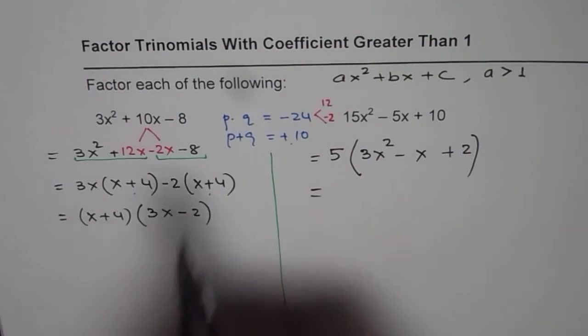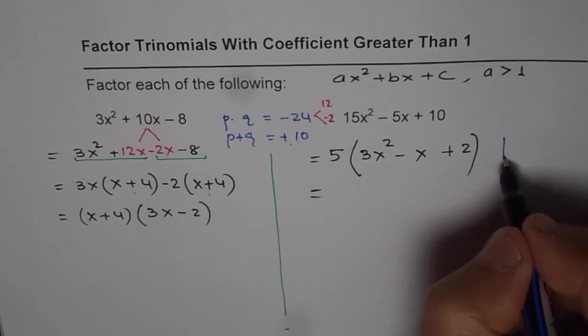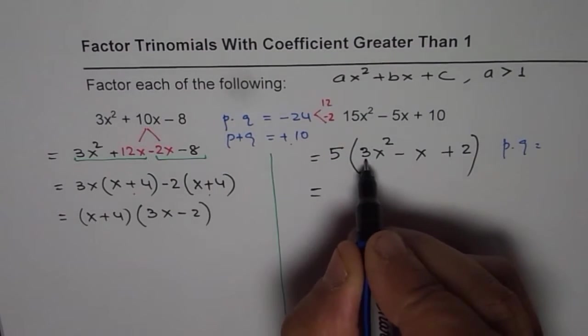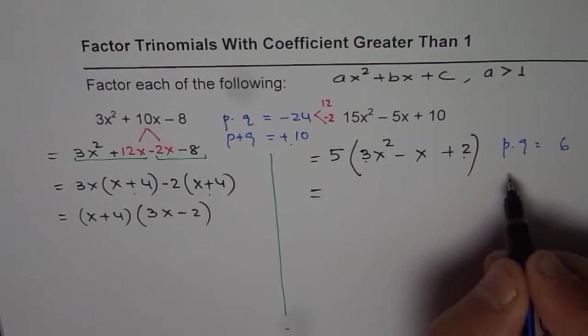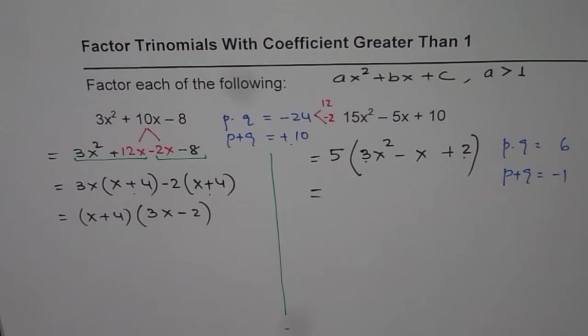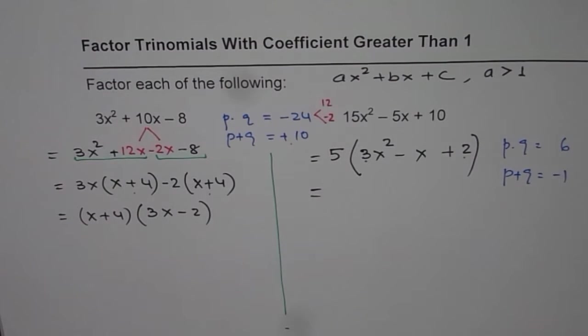Now we will again follow the same strategy. We are looking for product of two numbers as 3 times 2 which is +6 and their sum should be equal to -1. So -1. Can we do it? Now 6 is possible with 3 times 2.